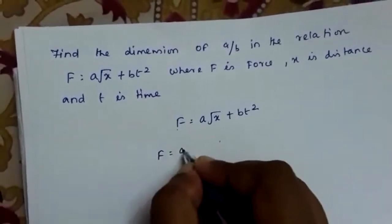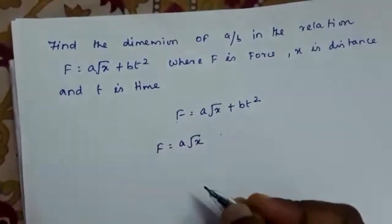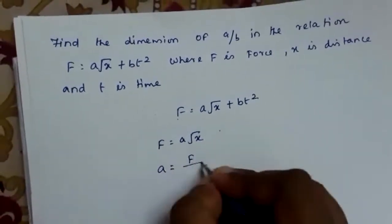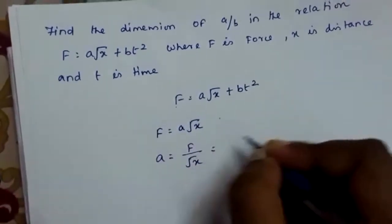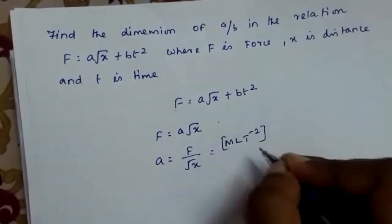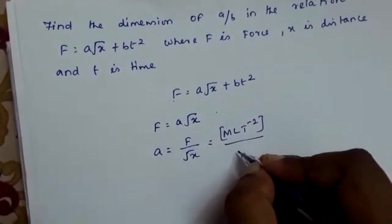So we can write F = a·√x. From this we can find a = F/√x. For F, the dimension is MLT⁻². For √x, it is x^(1/2), so it is L^(1/2).